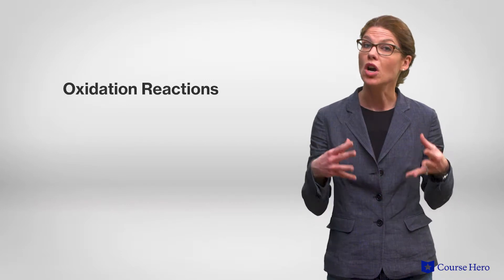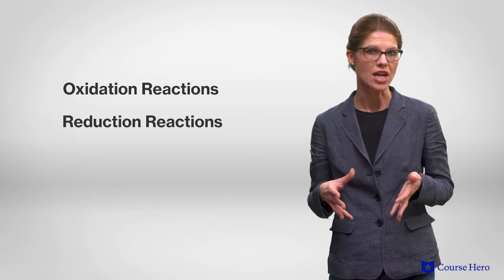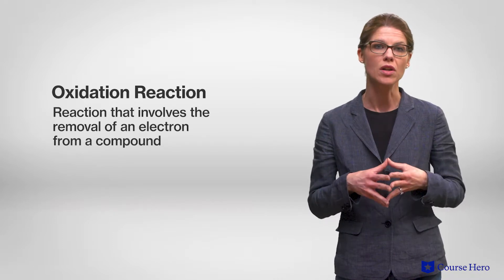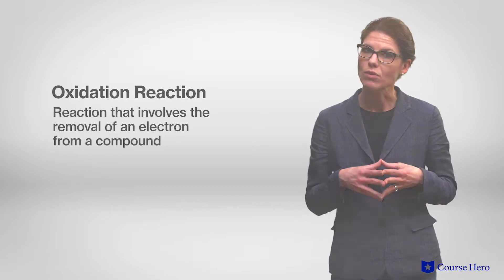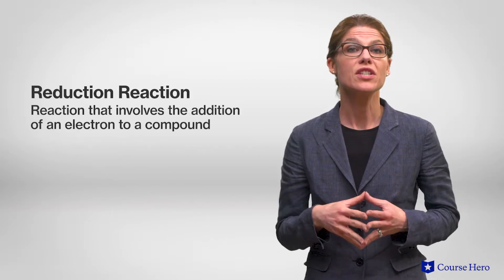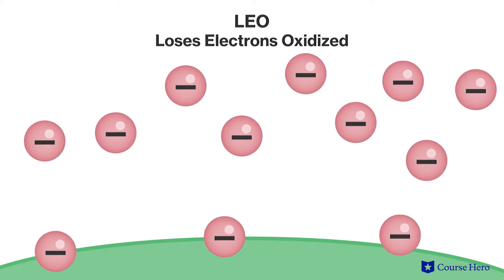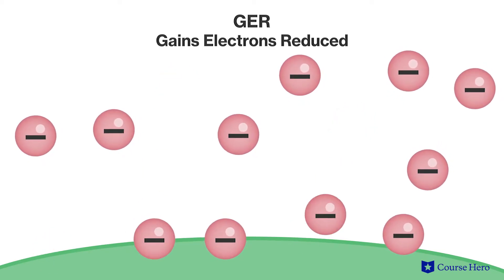Most of the chemical processes involved in cellular respiration include oxidation reactions and reduction reactions, collectively known as redox reactions. An oxidation reaction involves the removal of a negatively charged electron particle from a compound, while a reduction reaction involves the addition of this electron to a compound. It is helpful to remember the function of these reaction pairs using the acronym LEO-GER, or LEO the lion goes GER. LEO stands for Loses Electrons Oxidized, and GER stands for Gains Electrons Reduced.